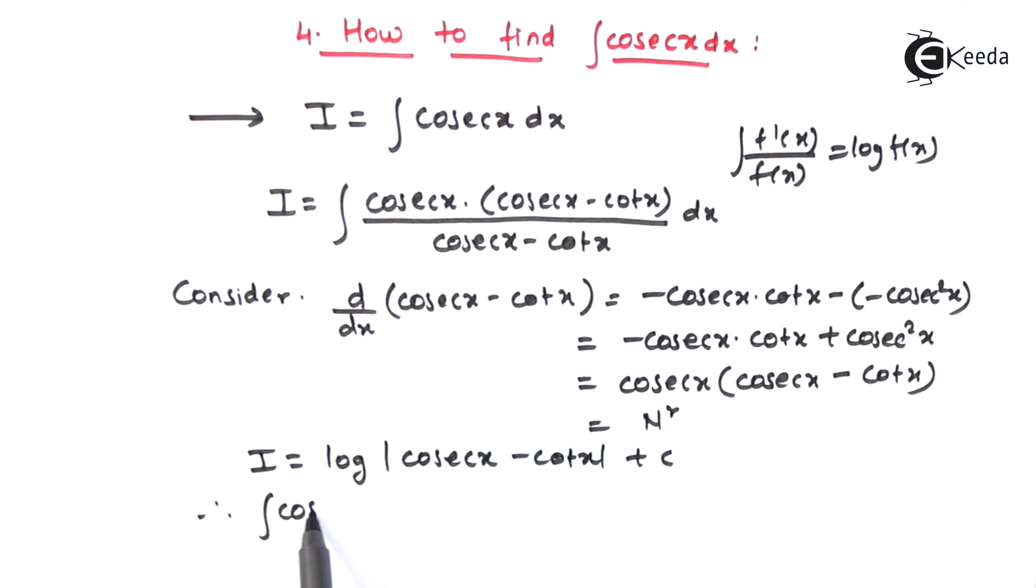Therefore, integral cosec x dx is equal to log of cosec x minus cot x plus c.